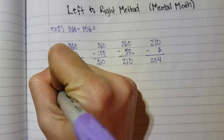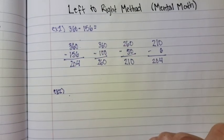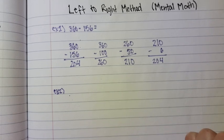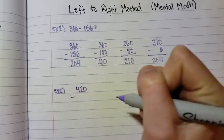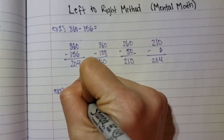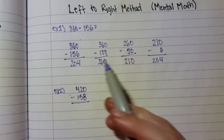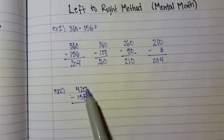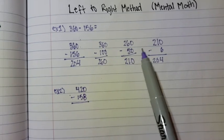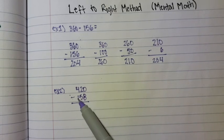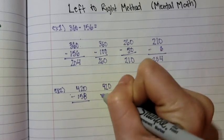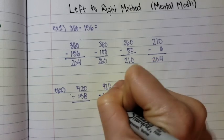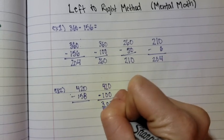Example 2 is 420 minus 158. I'm just going to start off by writing this in standard notation. Like we did up here, we're going to break up the number, basically. We're going to start from the far left and break it up. So, 158, we're going to start it off by breaking it into 100. We're going to do 420 minus 100, and that is going to be 320.